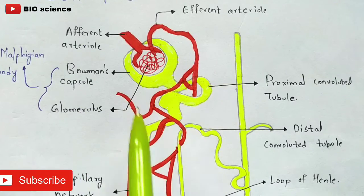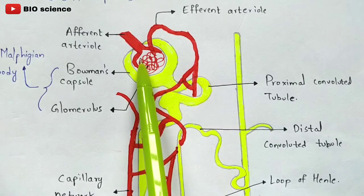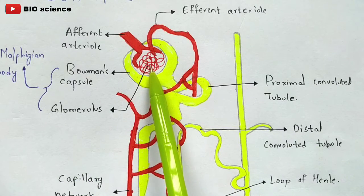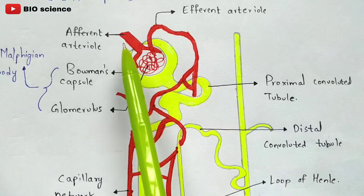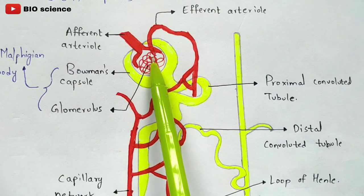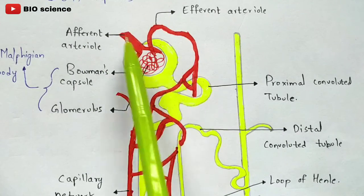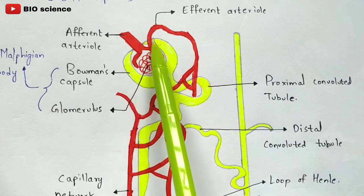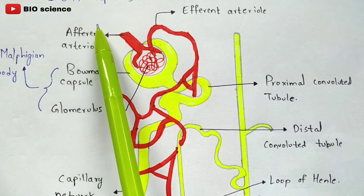Here we have the structure of the nephron. There will be a glomerulus inside the Bowman's capsule — the glomerulus is nothing but blood capillaries where most of the filtration will be done. The glomerulus starts with the afferent arteriole and ends with the efferent arteriole. The afferent arteriole is very wide, while the efferent arteriole is very narrow and thin.